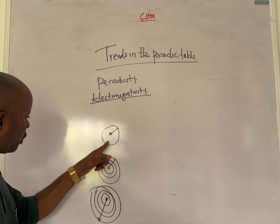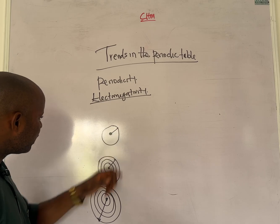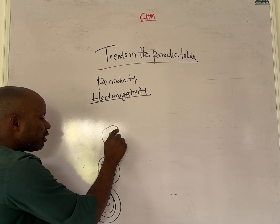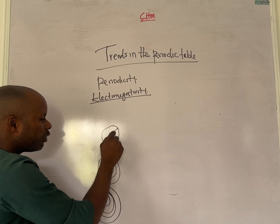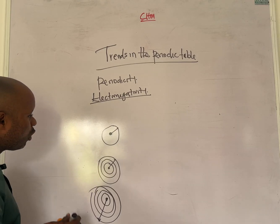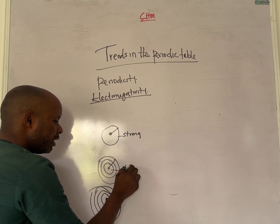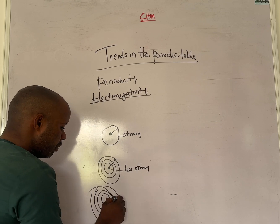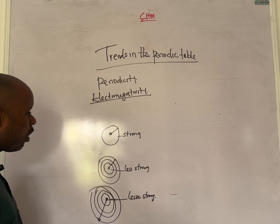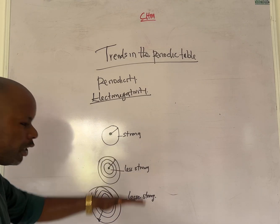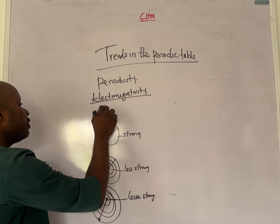For a period one element the valence electron is very close to the nucleus, so the force of attraction between the nucleus and the valence electron is strong. As you go down the group and the number of shells increases, the force of attraction between the nucleus and the valence electron decreases. Therefore, electronegativity decreases down the group.